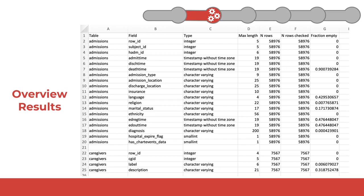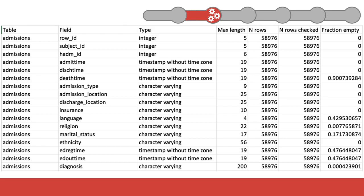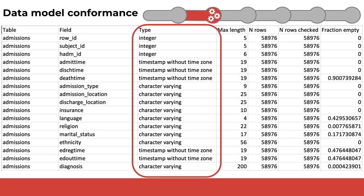The screenshot only shows columns from the Admissions and Caregiver tables; other tables appear below. Focusing on the overview results for the Admissions table, we get a closer look at the analysis of each column in that table. One common data quality dimension is conformance to a data model specification. This view provides information on the data types for a column in a table. A data analyst can review these data types to ensure that they match what the common data model specification expects to be used for each column.